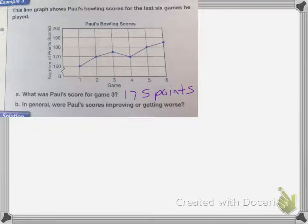The second question asks, in general, were Paul's scores improving or getting worse? So improvement means that your scores will be going up. If you're not improving, your scores will go down. So overall, there's only one place where his score went down, and that was game four. So overall, his scores are improving. So my answer would be, he's improving.